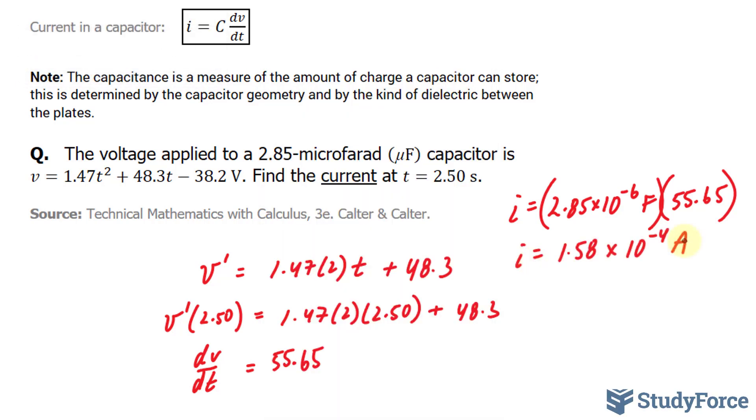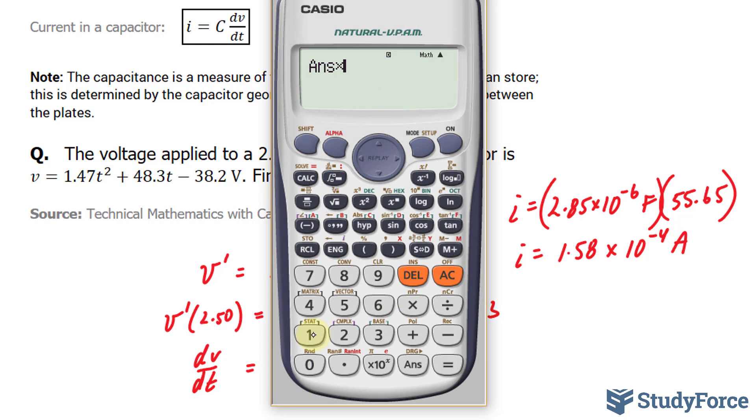If you want to represent this in milliamps, you can do that as well. To do that, you multiply it by 1,000. So multiplying this by 1,000 gives us 0.159 milliamps.